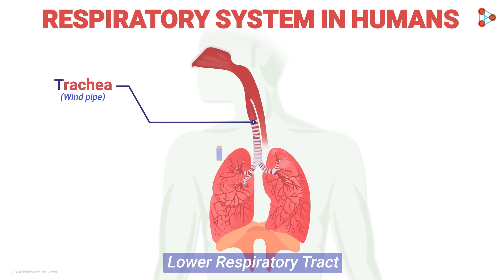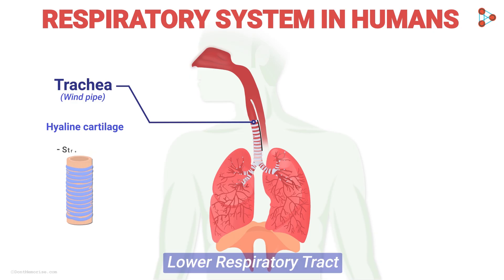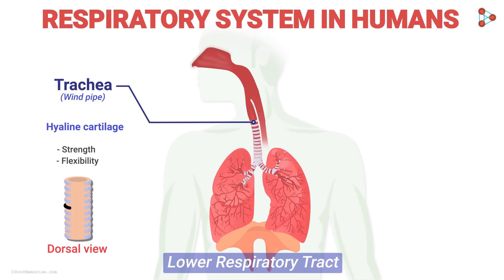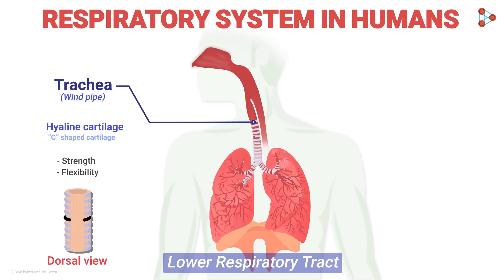The trachea is surrounded by rings of cartilage. It is the hyaline cartilage that surrounds the windpipe, which gives both strength and flexibility to the tracheal muscles. If the structure is observed from the dorsal view, the cartilage rings are found to be incomplete — they are C-shaped and do not form a complete ring-like structure. This helps in easy contraction of the muscles when food is passed down the esophagus lying just behind the trachea.